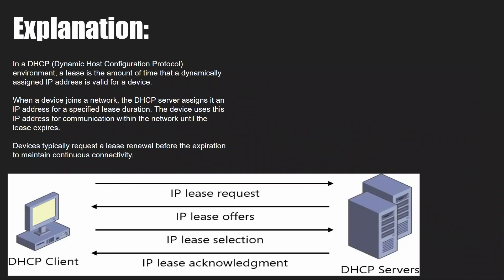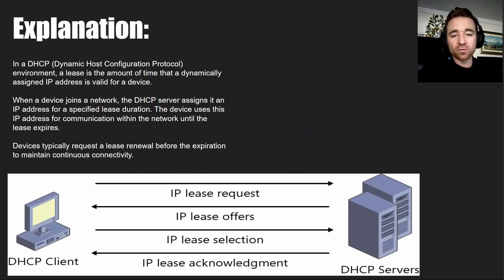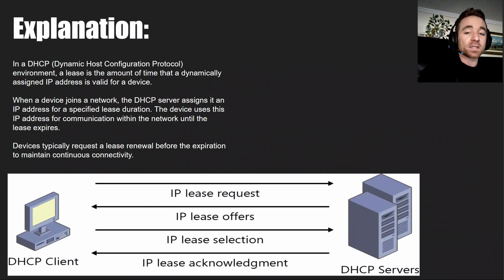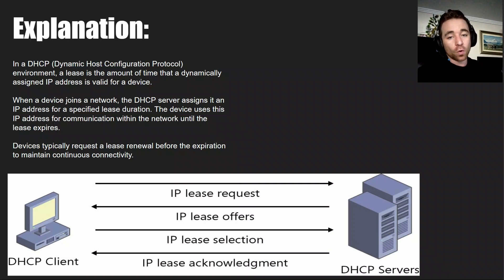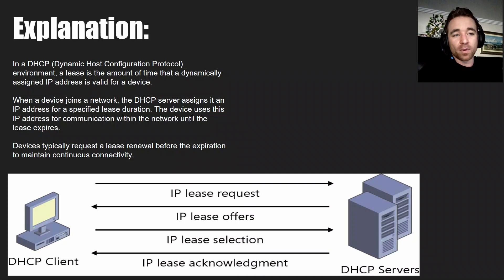The answer is B — a fixed IP address assigned permanently based on a device's MAC address. DHCP has a pool of IP addresses; when you join the network it gives you one. But with a reservation, you're saying: look at my MAC address and never give this IP to any other device — reserve it for me, and always give me that same IP address when I join. That's essentially what a reservation is.